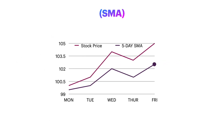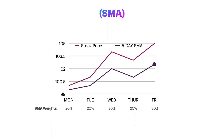In an SMA, each period in the calculation has equal value. However, in an EMA, older periods have diminishing weights to the average and more recent periods have greater weight.